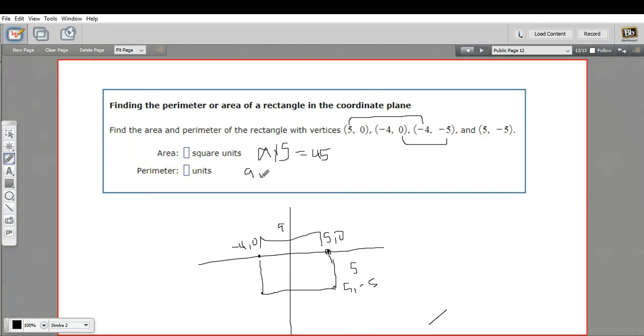So it's going to be 9 plus 9 plus 5 plus 5. So that's 18 plus 10 or 28 units. So that's how to find the perimeter or the area of a rectangle when you're just given the coordinates.